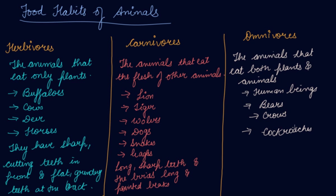Omnivores have sharp and strong teeth. I hope you have understood the three types. According to their food habits, we have divided animals into three parts: herbivores, carnivores, and omnivores.